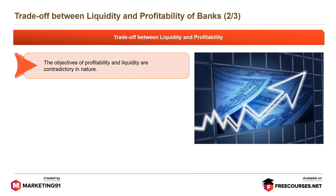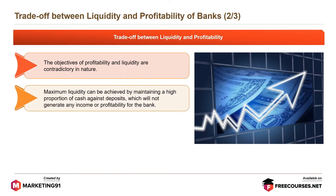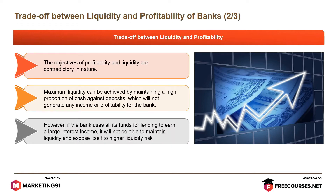The objectives of profitability and liquidity are contradictory in nature. Maximum liquidity can be achieved by maintaining a high proportion of cash against deposits, which will not generate any income or profitability for the bank. However, if the bank uses all its funds for lending to earn a large interest income, it will not be able to maintain liquidity and will expose itself to higher liquidity risk.